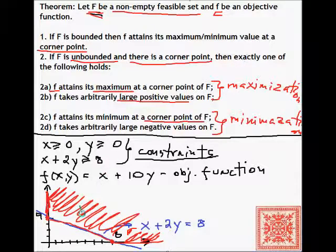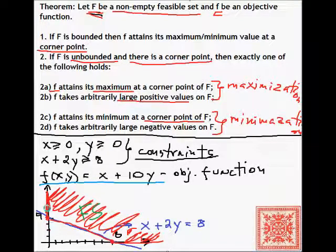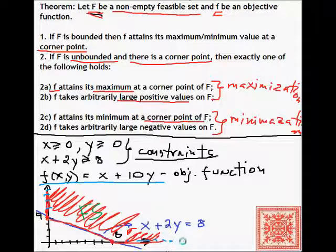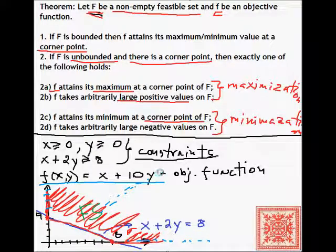Obviously, if we're trying to maximize f(x, y), then f will take arbitrarily large values in this unbounded set. If we fix x = 0, f(x, y) takes arbitrarily large values along the y-axis, and similarly we can fix y = 0 and take arbitrarily large values along the x-axis.